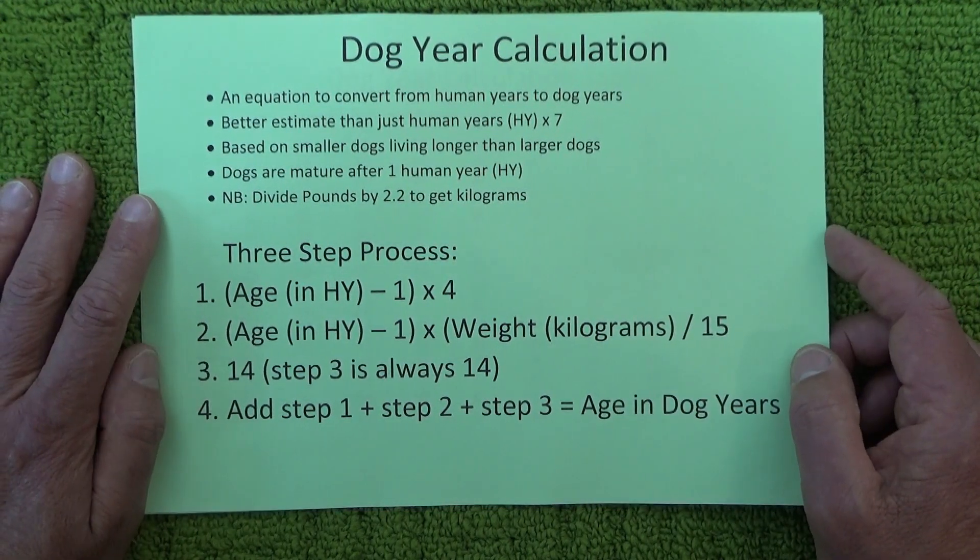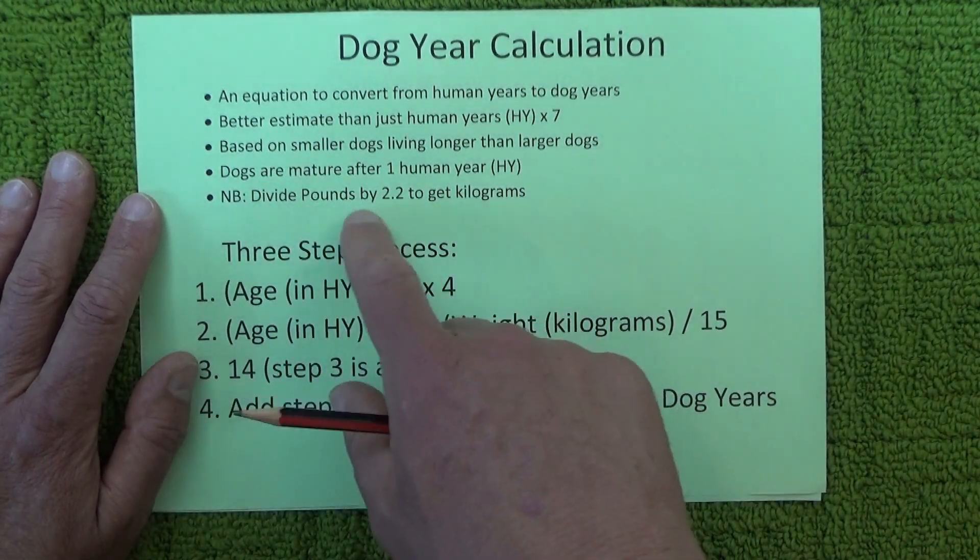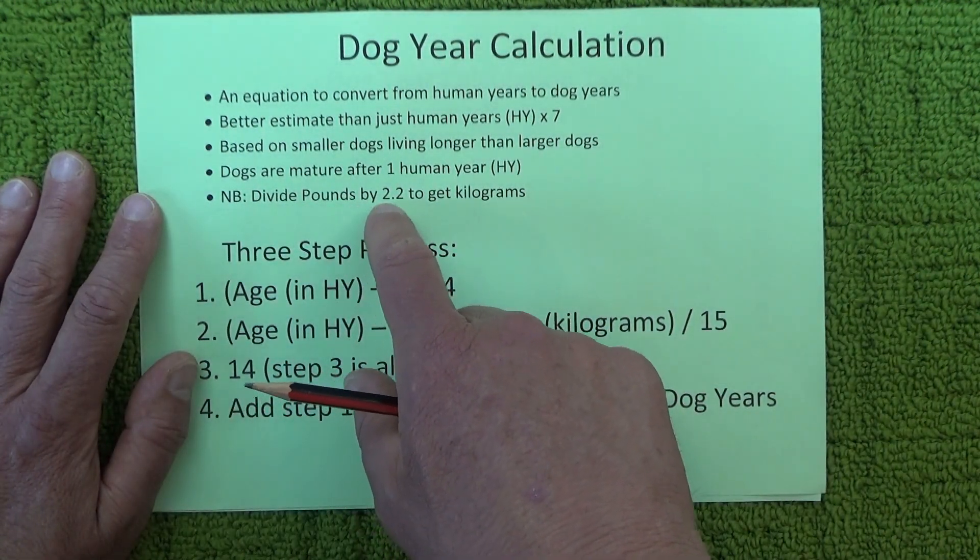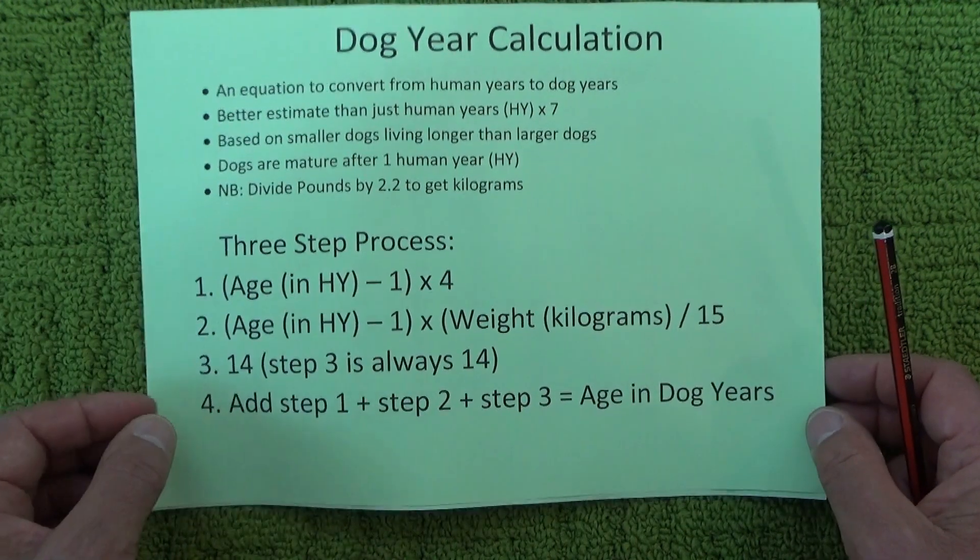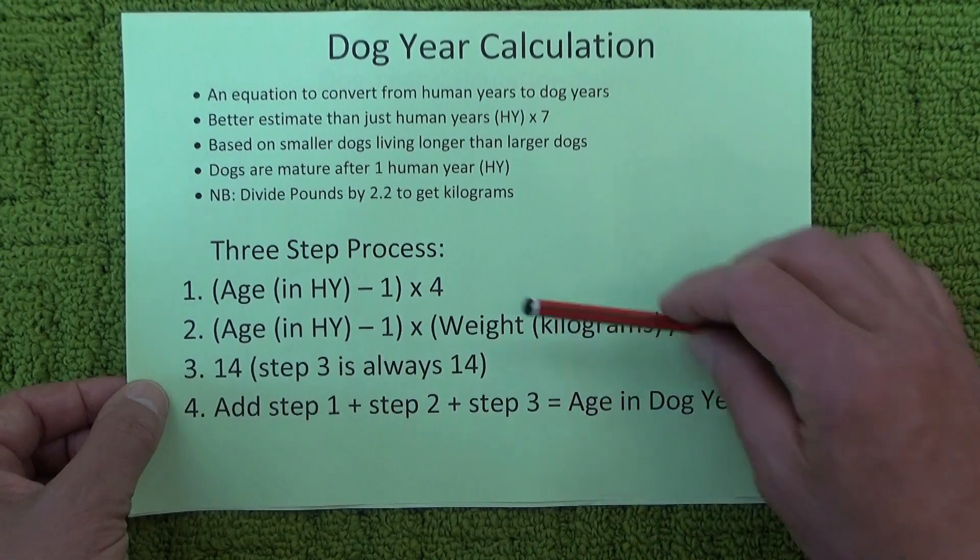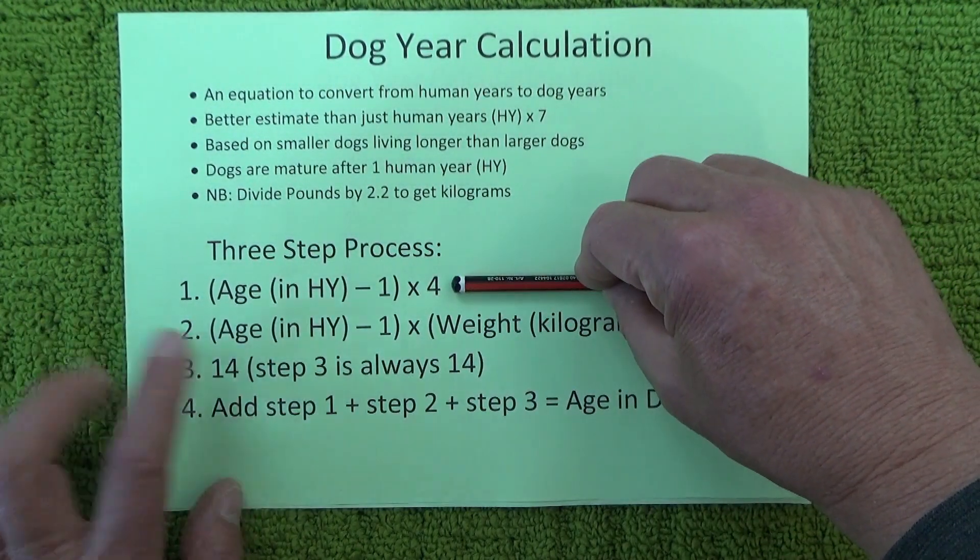If you're working in pounds, all you need to do is divide by 2.2 to get kilos. The calculation is just a simple three-step process.